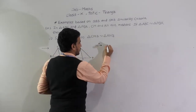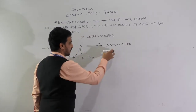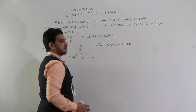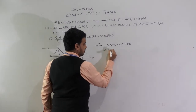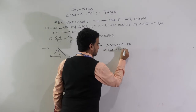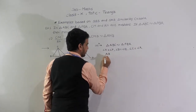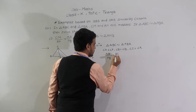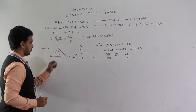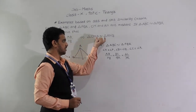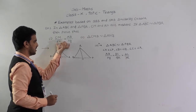Since triangle ABC is similar to triangle PQR, corresponding angles are equal and corresponding sides are in proportion: angle A equals angle P, angle B equals angle Q, angle C equals angle R, and AB upon PQ equals BC upon QR equals AC upon PR. Now we have to show triangle CMB similar to triangle RNQ. If we take the ratio AB by PQ equals BC by QR and multiply by half: half AB upon half PQ equals BC by QR.